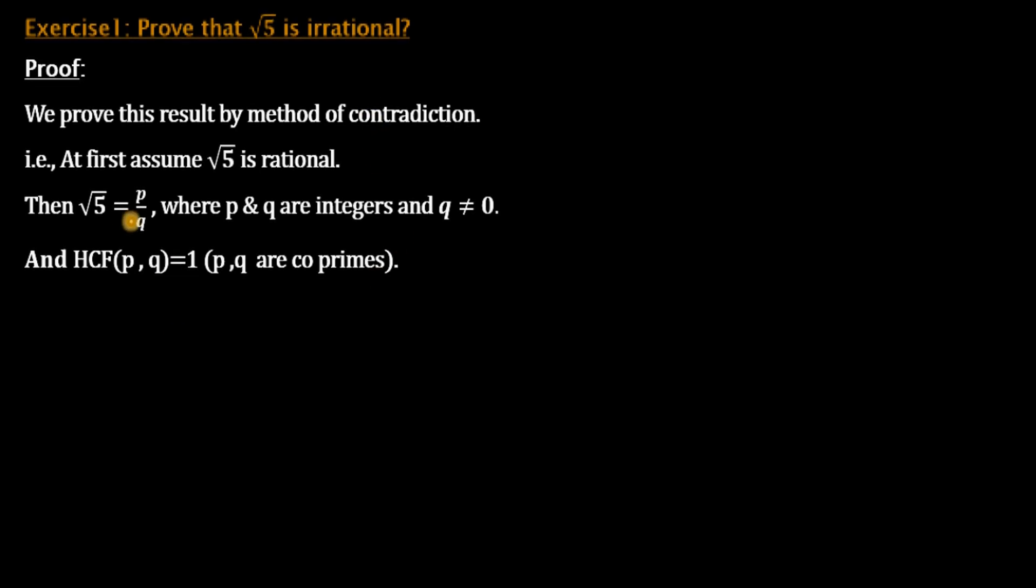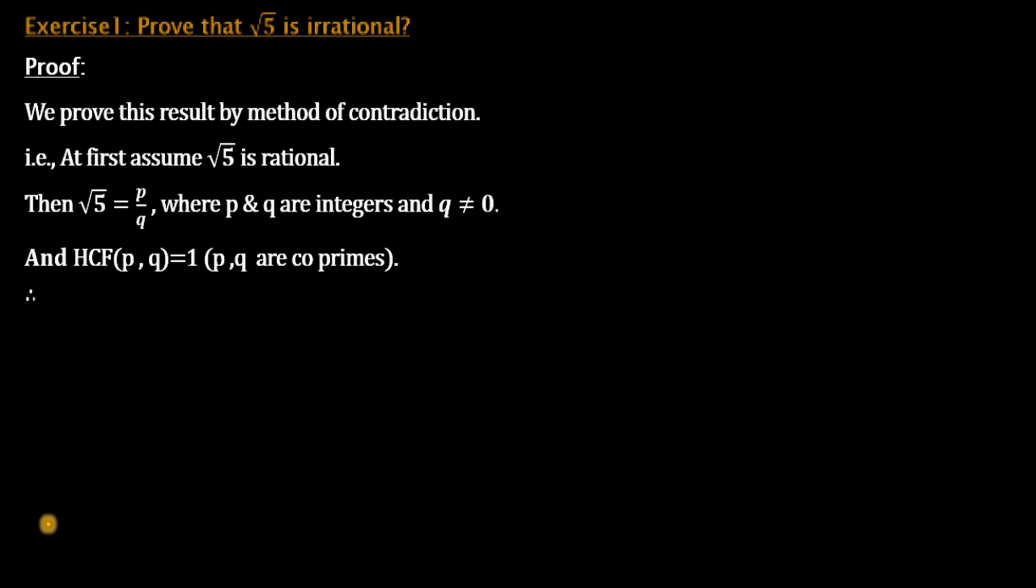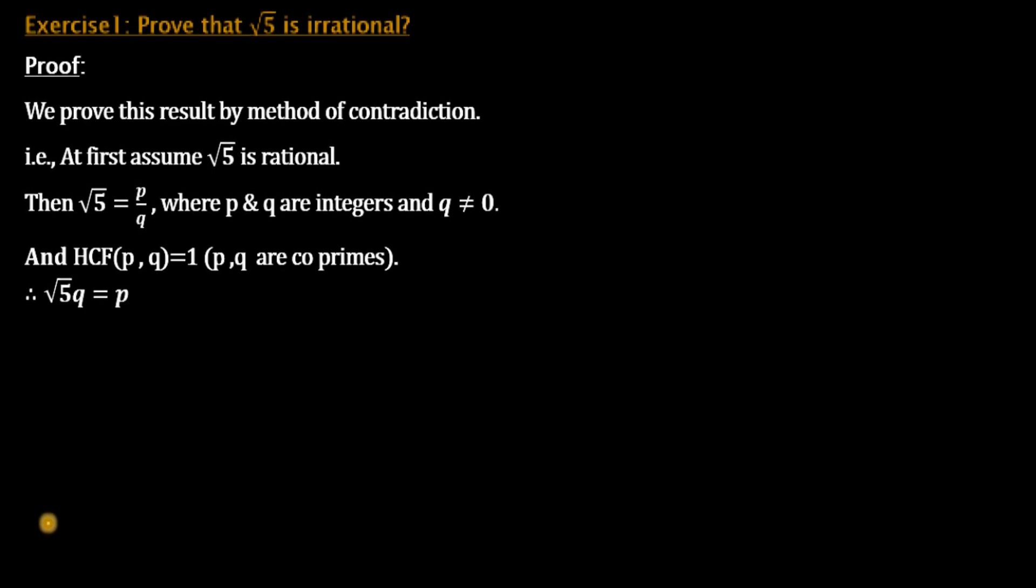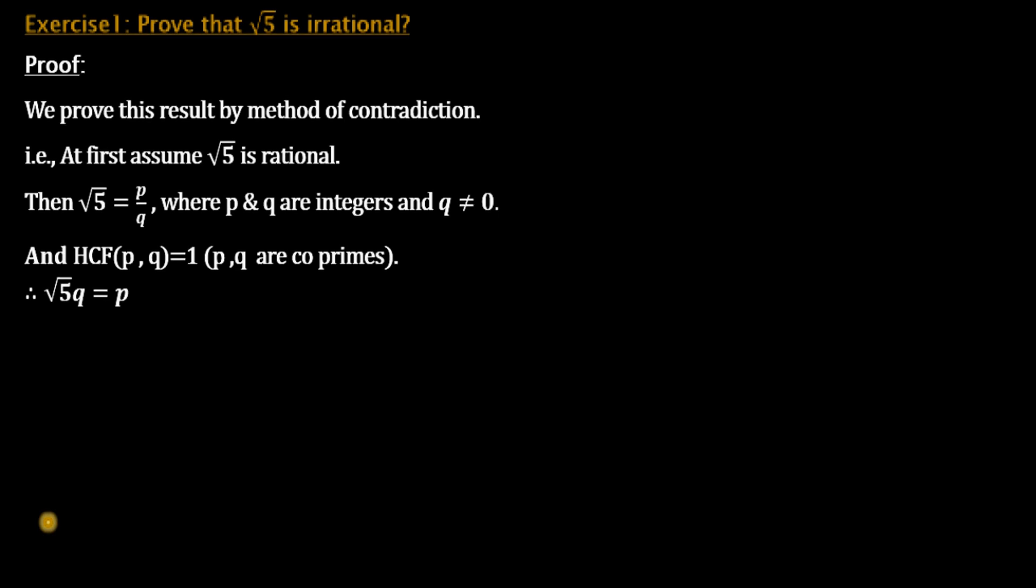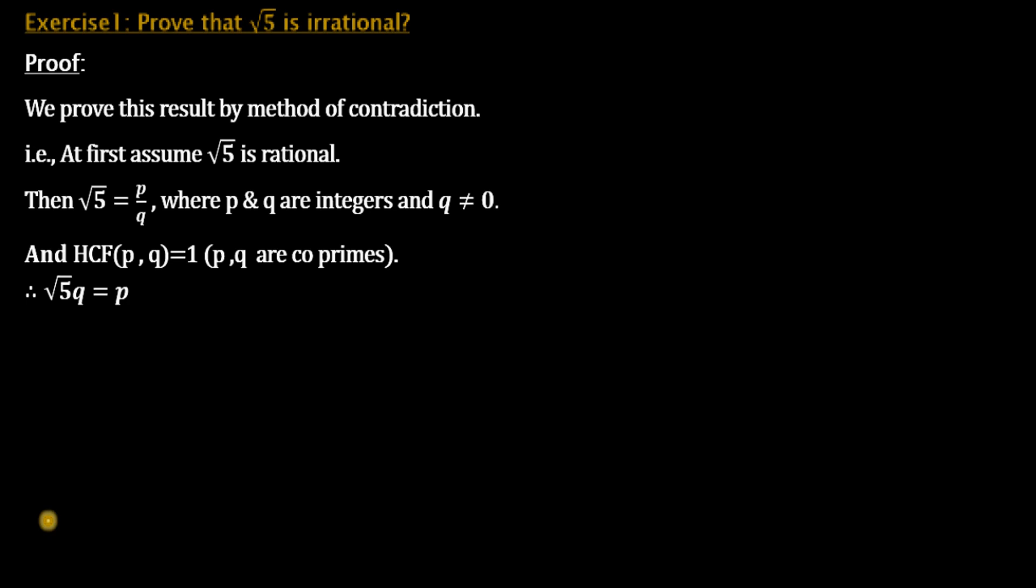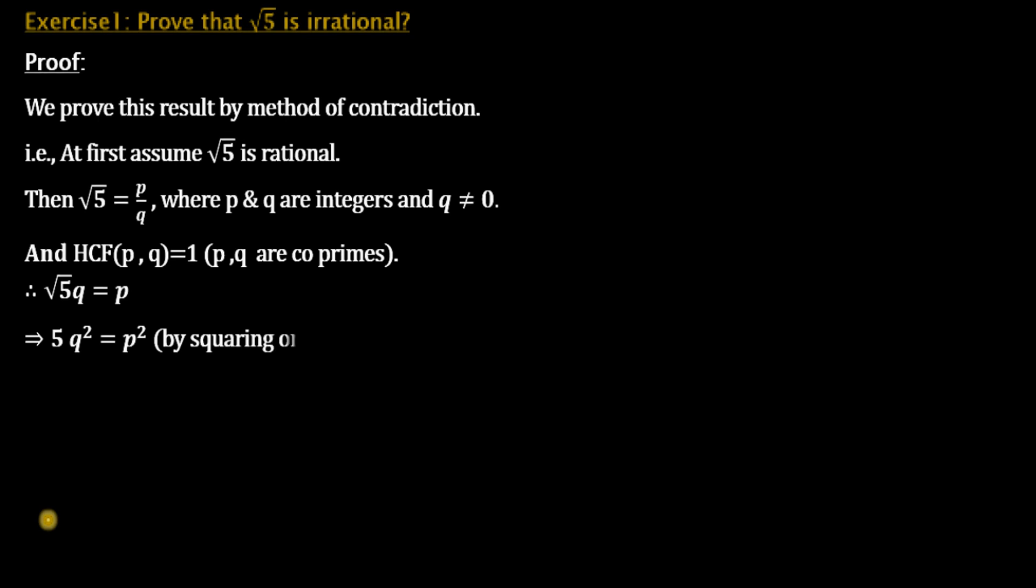Then what next? We are taking Q to the left-hand side, then √5Q = P. On squaring both sides, we will get 5Q² = P² by squaring on both sides.